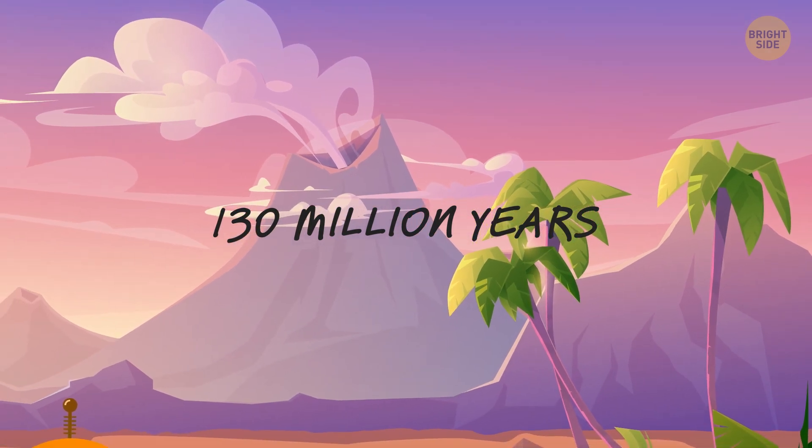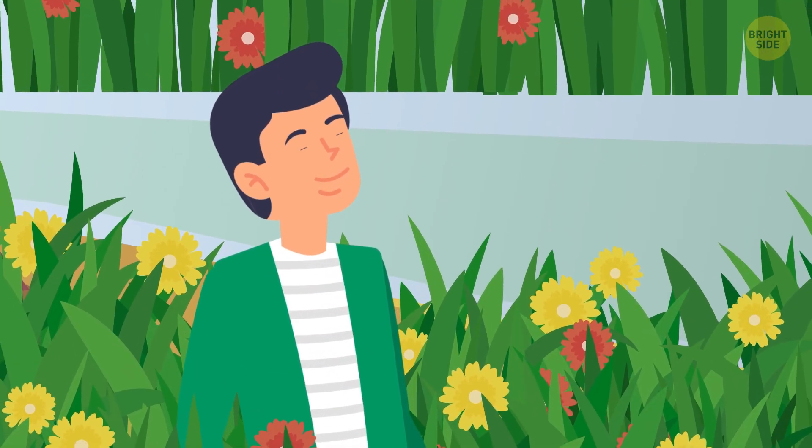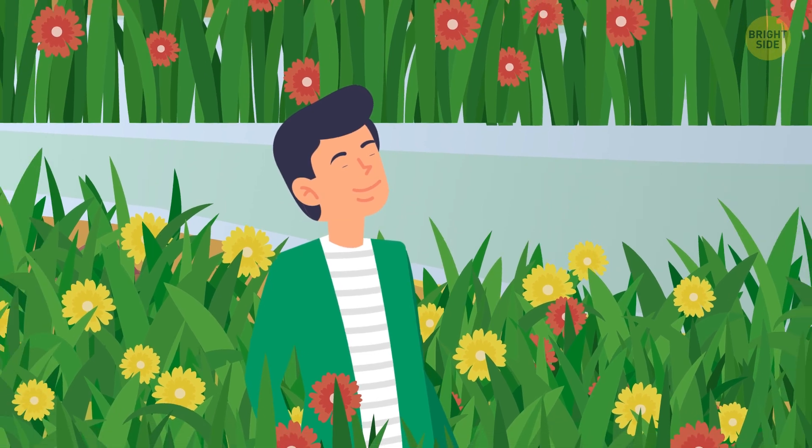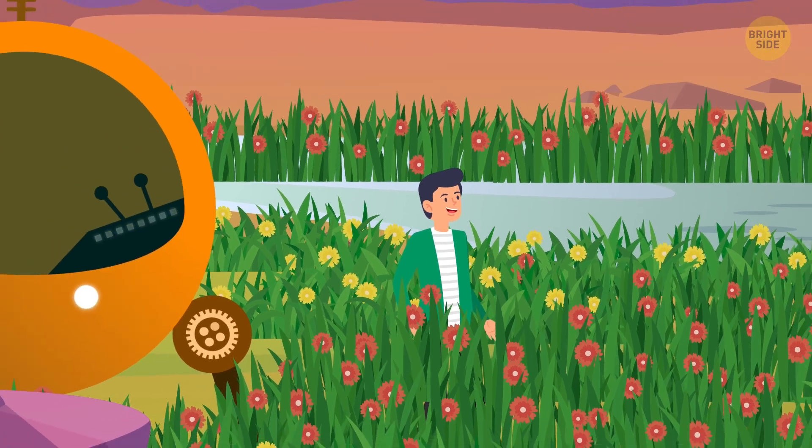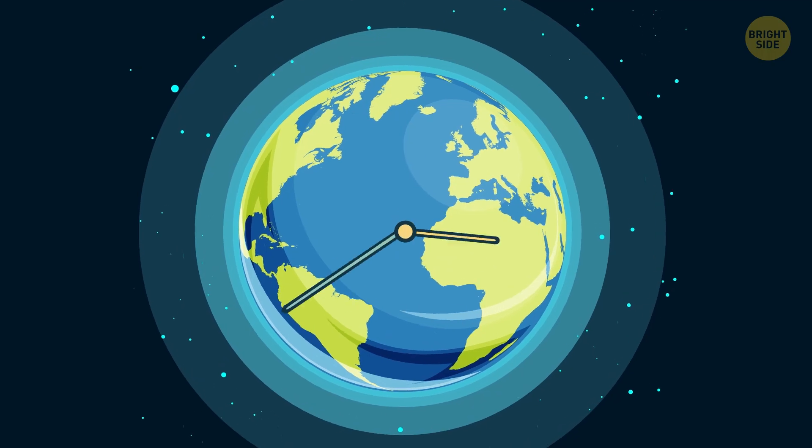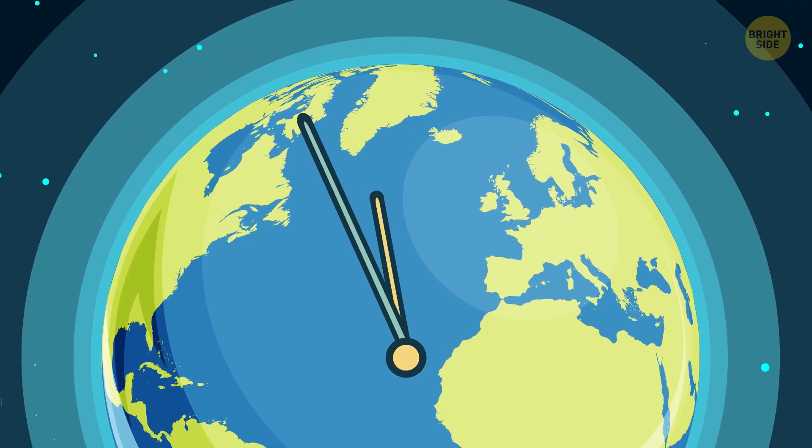130 million years into the past, and Sam inhales a fresh scent of the first flowering plants. It means modern flowers have been around for a while. But if all Earth's history was compressed into an hour, flowering plants would only exist for the last minute and a half.